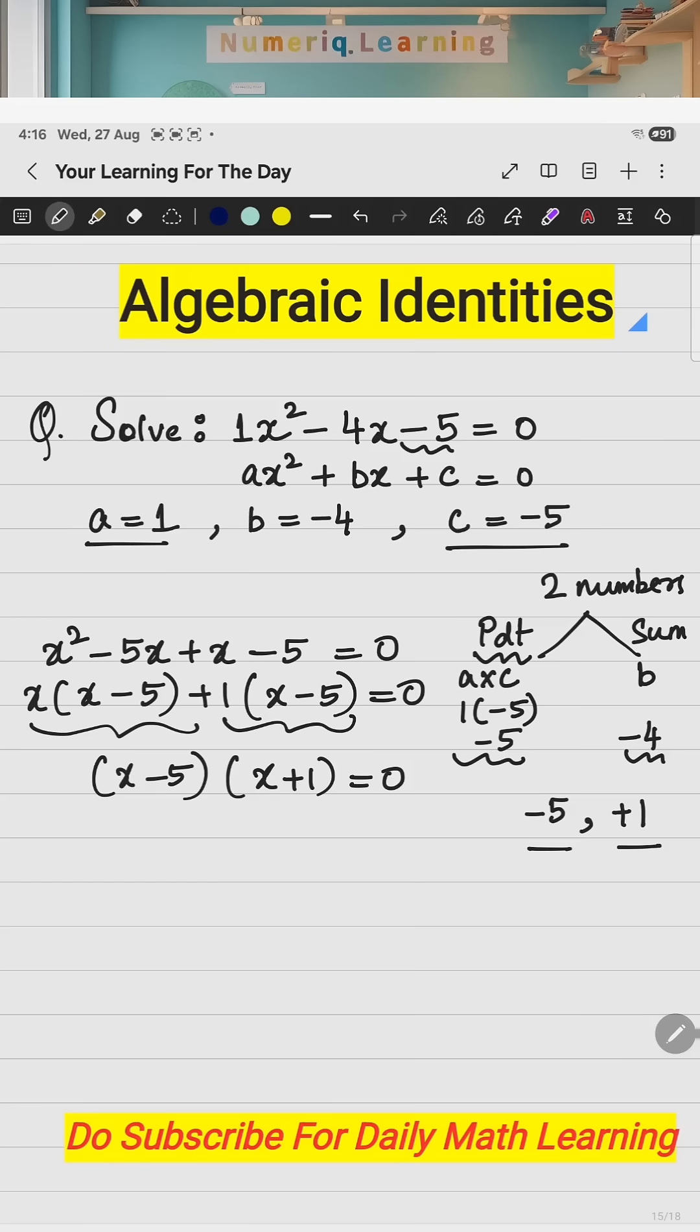Now, what do you apply? You apply the zero product property. What do you mean by zero product property? If x minus 5 multiplied by x plus 1 equal to 0, it means either x minus 5 is equal to 0 or x plus 1 equal to 0. In this case, x is equal to 5, in this case we will have x equal to - plus 1 goes the other side, it is minus 1.